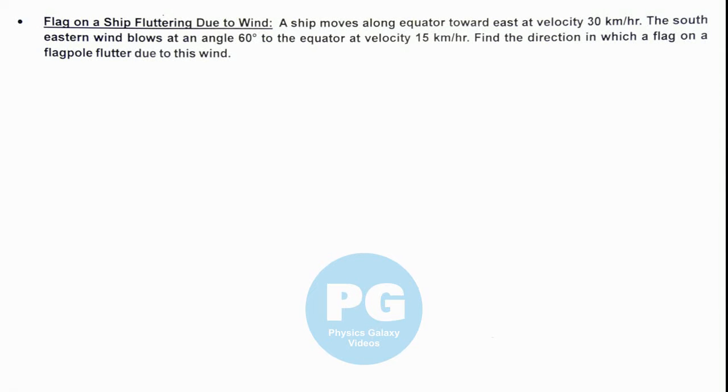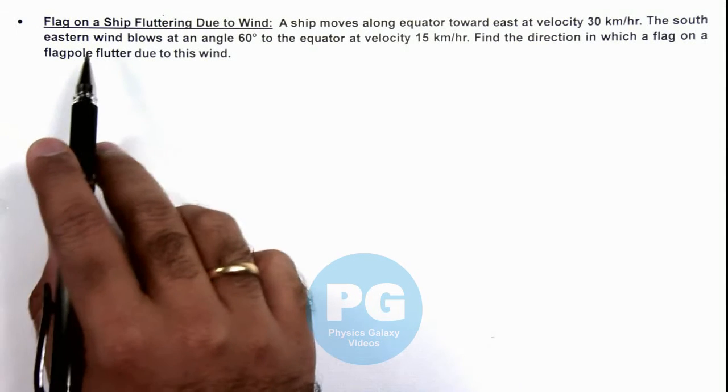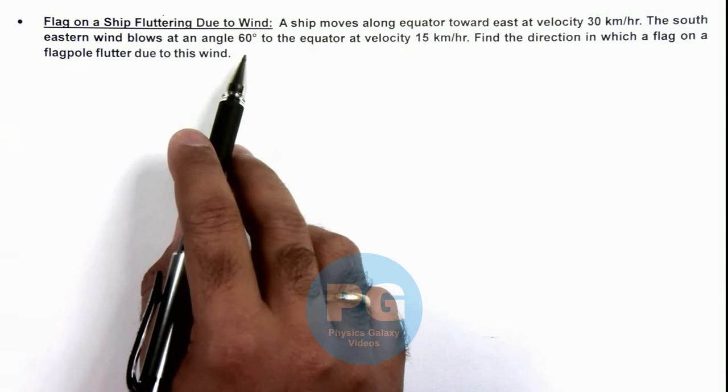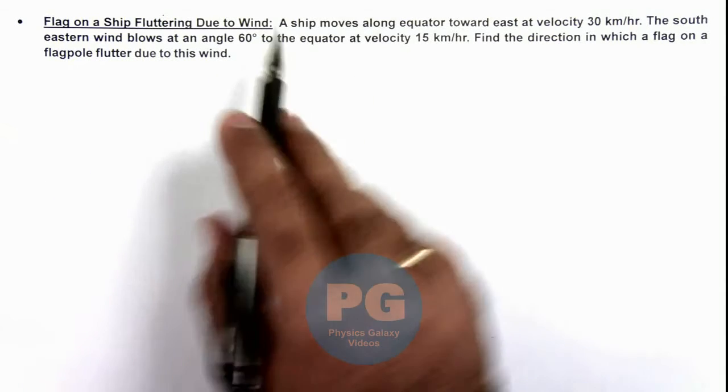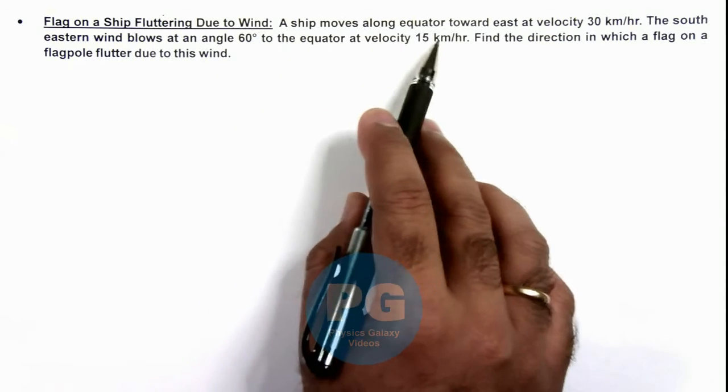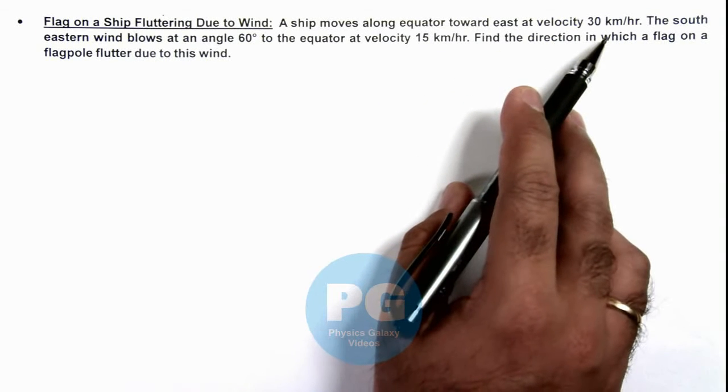In this illustration we'll study a flag on a ship fluttering due to wind. The situation is described as a ship moves along the equator toward east at velocity 30 kilometers per hour.